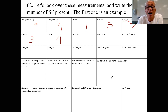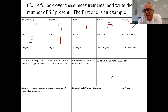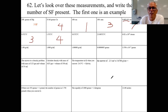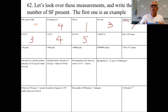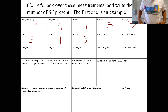This next temperature is 10.552 — that zero is in between significant figures, so they're all significant: five significant figures.